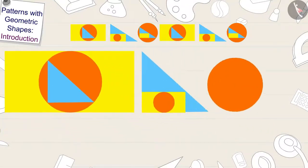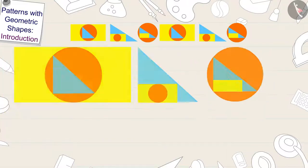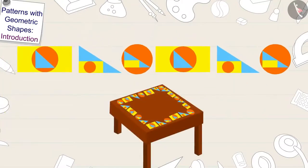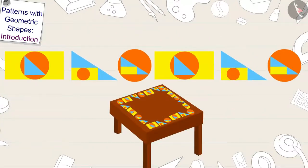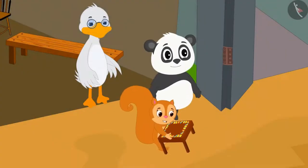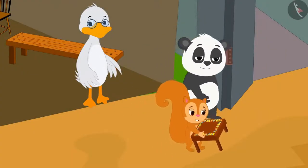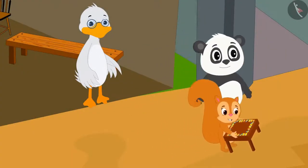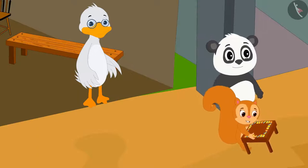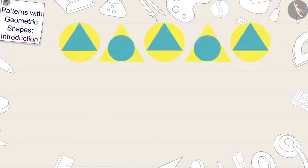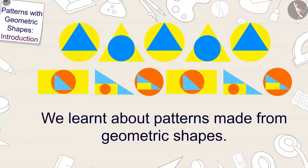By repeating this rule again and again, Uncle has patterned his table. Chanda bought that table from Uncle and happily returned to her home. Children, in this video, we learned about patterns made from geometric shapes. In the next video, we will learn more about it by some interesting examples.